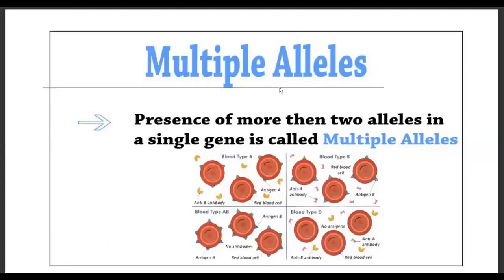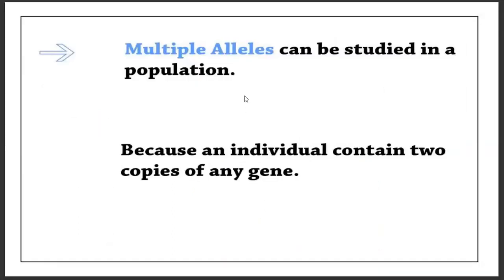Multiple alleles. The presence of more than two alleles in a single gene is called multiple allelism. Its examples are the ABO blood type system and the coat color in rabbit. Multiple alleles can be studied in a population because an individual contains two copies of any gene.